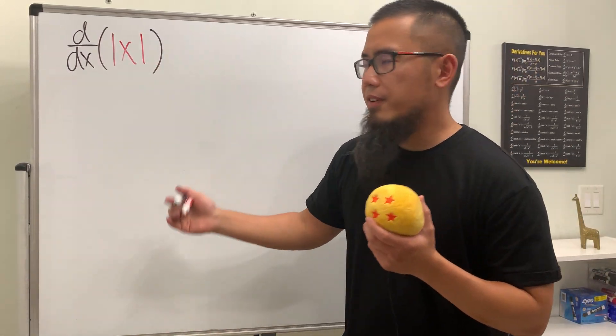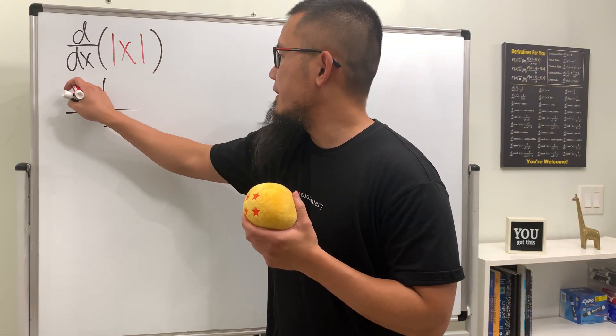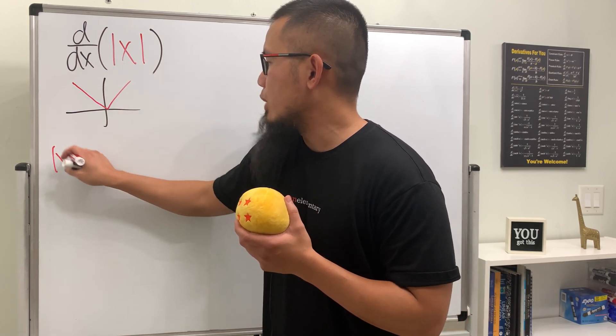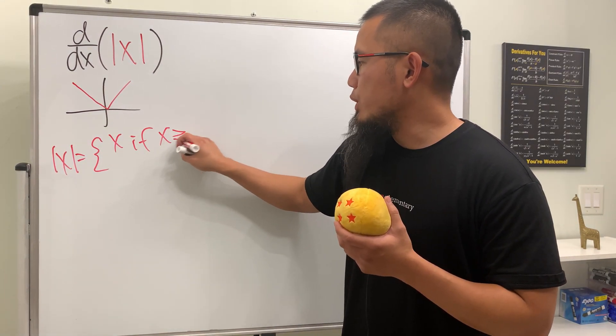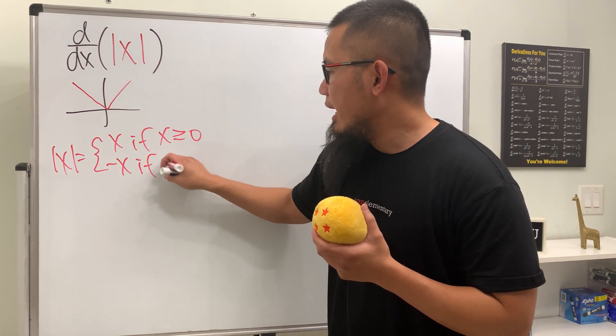I will show you two ways to differentiate absolute value of x. First, we can look at its graph, which looks like a V. Let's take a look at its piecewise definition, which is equal to x if x is greater than or equal to zero, and negative x if x is less than zero.